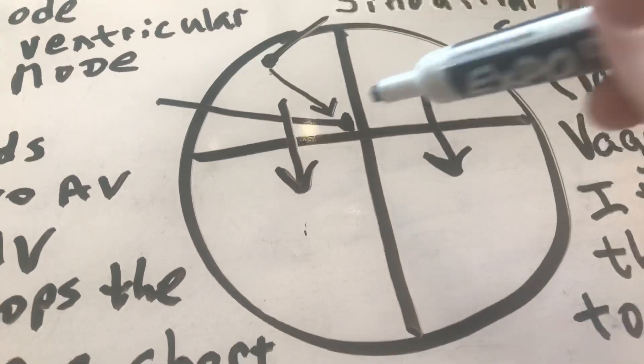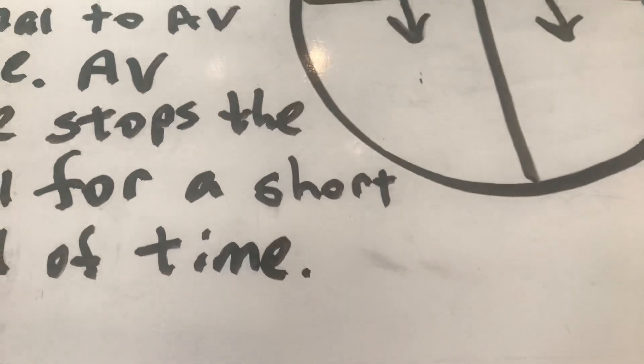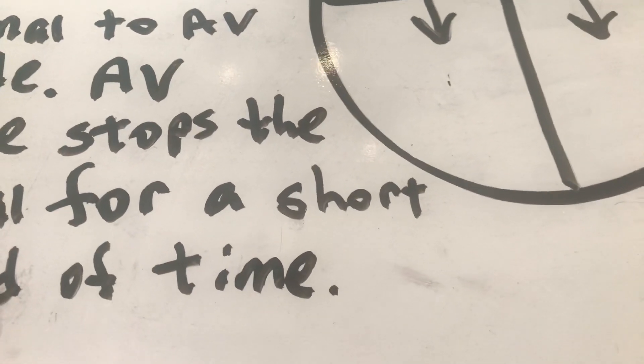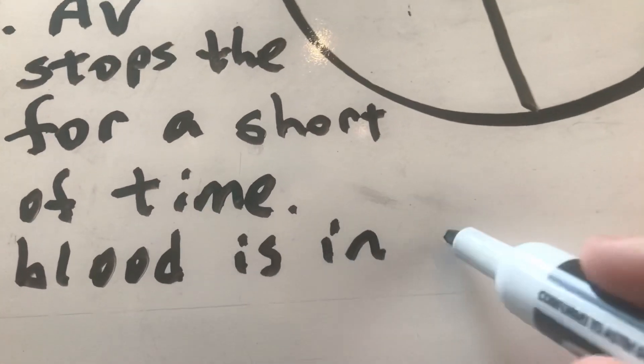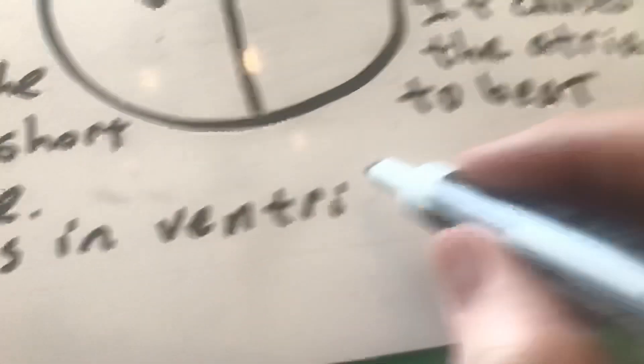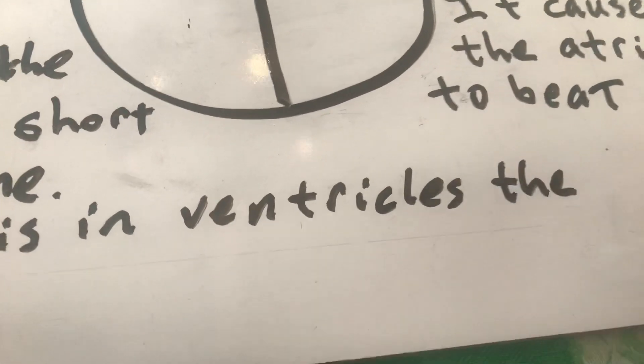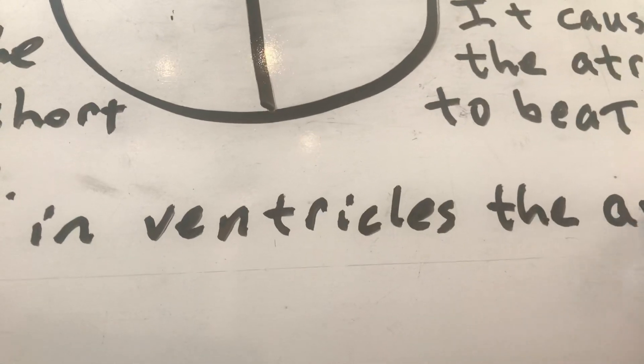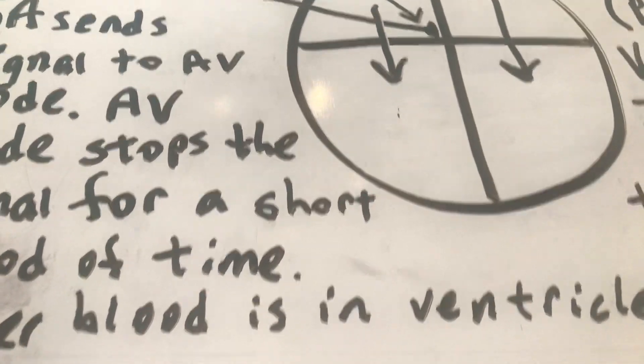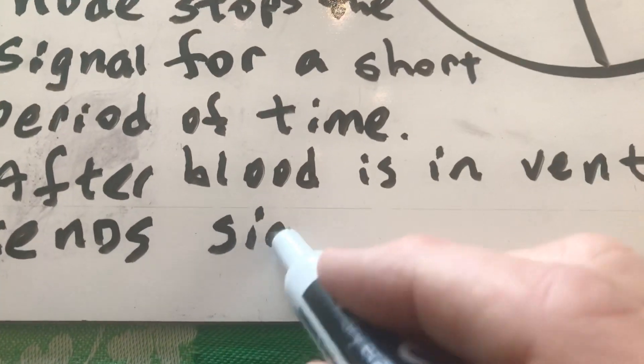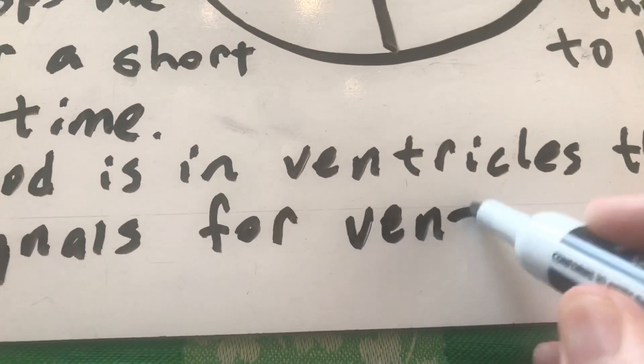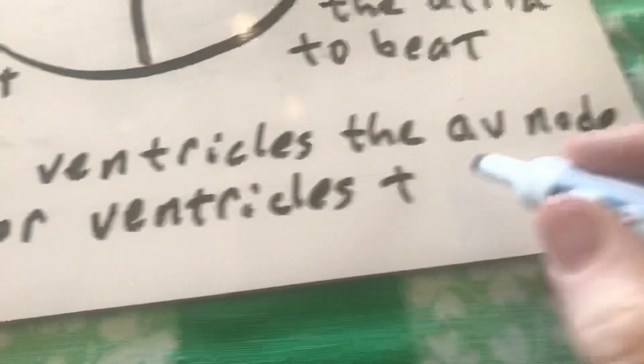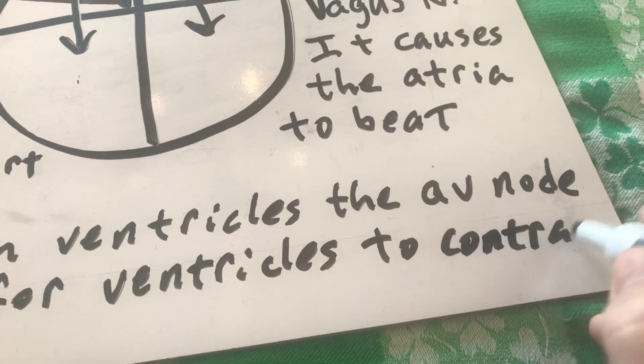So what the AV node does then is after the blood is in the ventricles, the AV node sends the signal for the ventricles to contract.